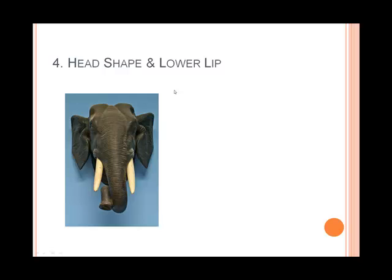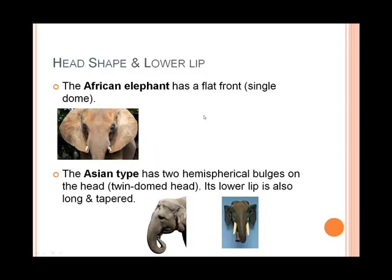Head shape and lower lip. The African elephant has a flat front — that's called a single dome. On the other hand, the Asian type has two hemispherical bulges on the head, called a twin dome head. You can see it here, and also its lower lip is much longer.